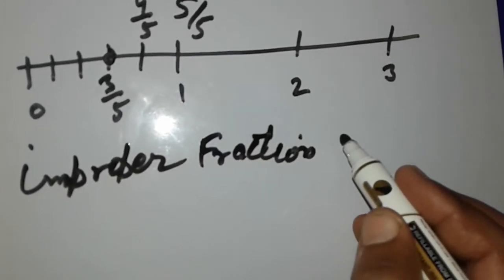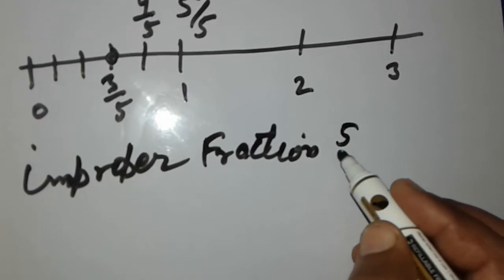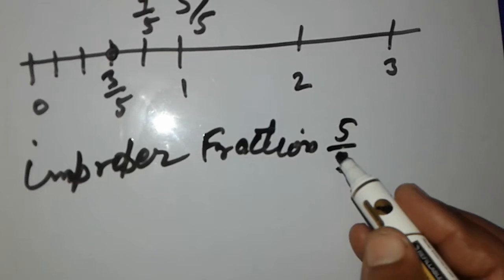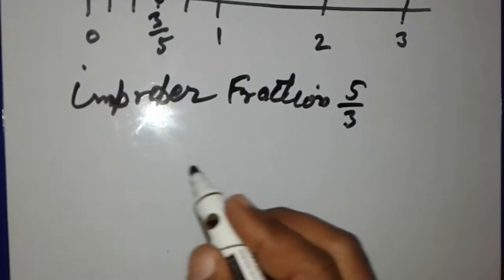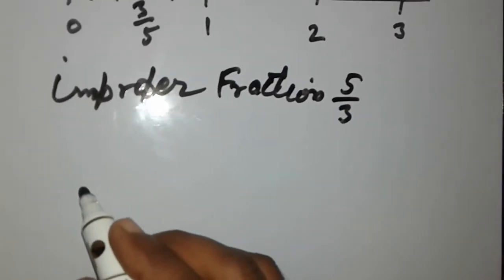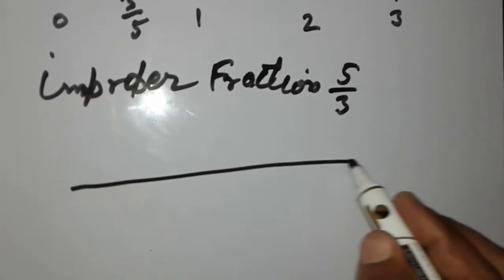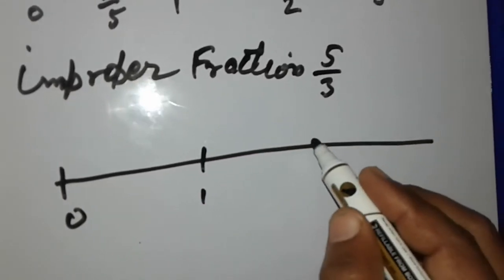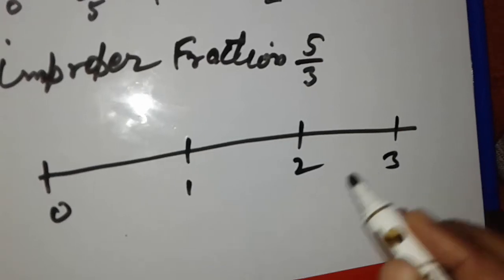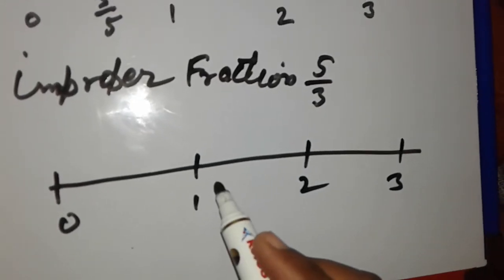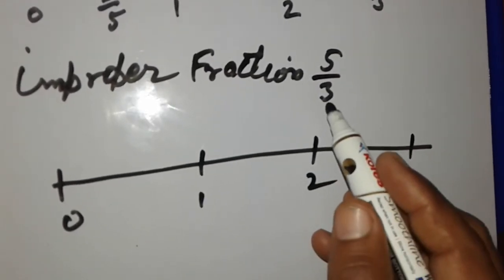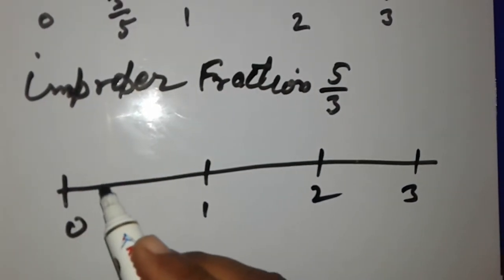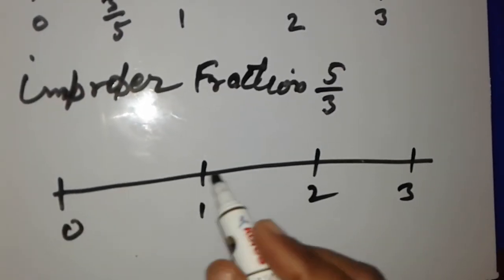We take 5 upon 3, which is an improper fraction, and represent it on a number line. The procedure is the same. We draw a number line and mark points 0, 1, 2, 3. We see the denominator is 3, so we make 3 equal parts from 0 to 1.